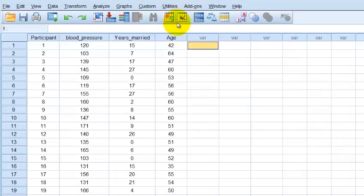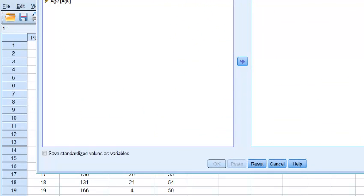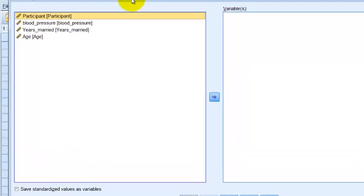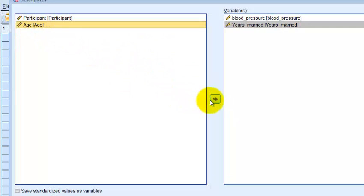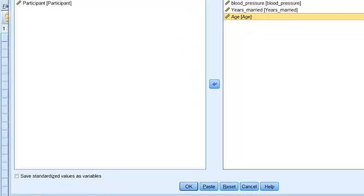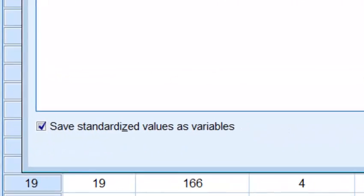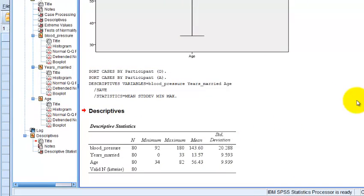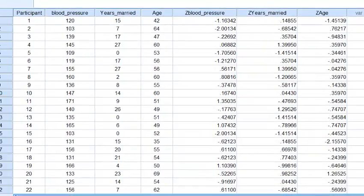We have blood pressure, years married, and age. We're going to go ahead and check them for outliers using the two standard deviation rule. So go to Analyze, Descriptives, Descriptives again. Get back in there. So we're going to take those over. Very important. There's a little tiny box down here on the bottom. Save standardized values as variables. So it's going to turn every piece of data into a z-score. Okay. So we're going to go back and look at our raw data.